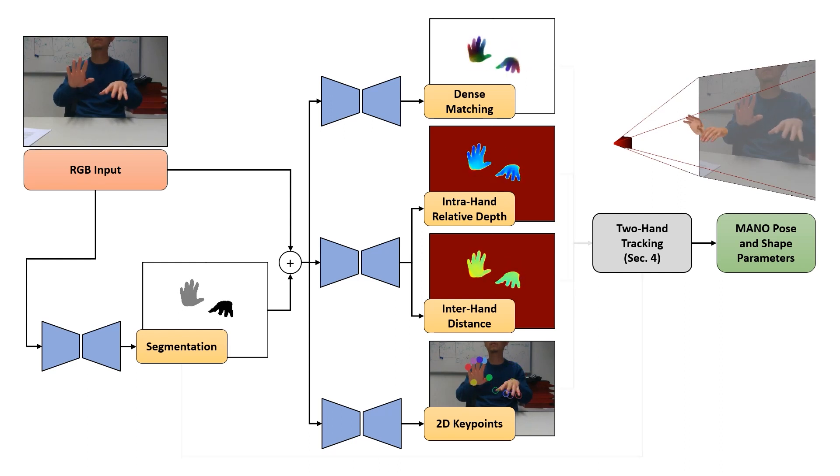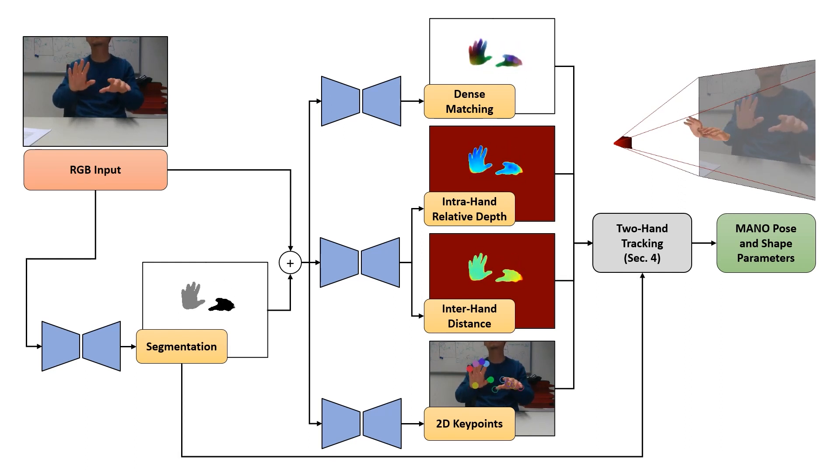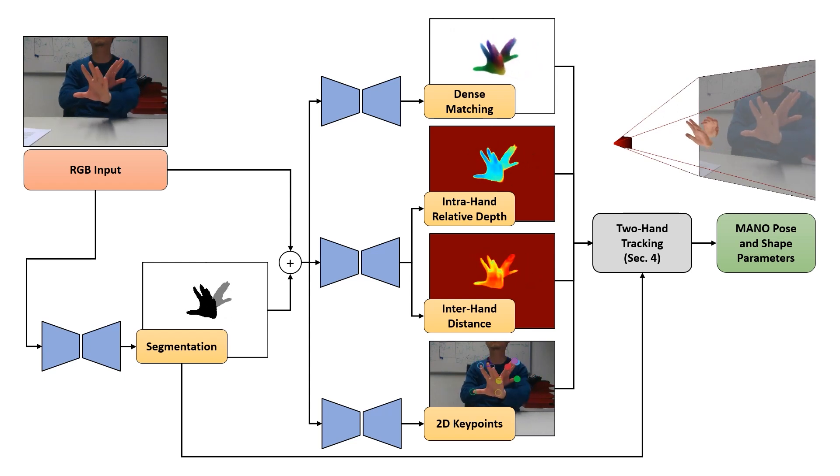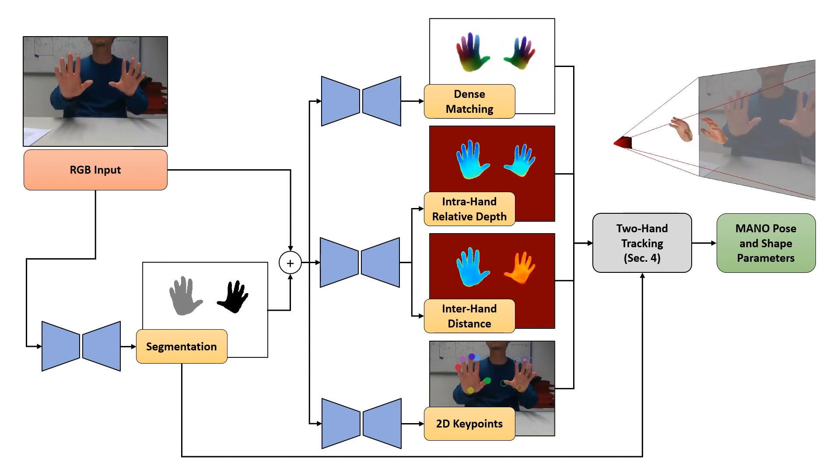The requested scene information is fed into the tracking system and is key to obtain accurate results for tracking two strongly interacting hands in 3D from monocular RGB video.